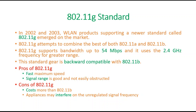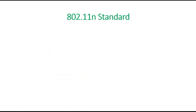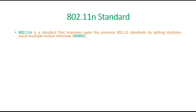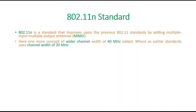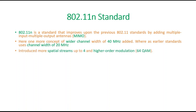Appliances may interfere on the unregulated signal frequency. For the 802.11n standard: 11n improves upon previous 802.11 standards by adding a concept called MIMO — Multiple Input Multiple Output. They also added a wider channel width of 40 MHz, whereas in older standards the channel width was 20 MHz. Spatial streams of up to 4 and a higher order modulation technique, 64-QAM, were introduced in 11n.